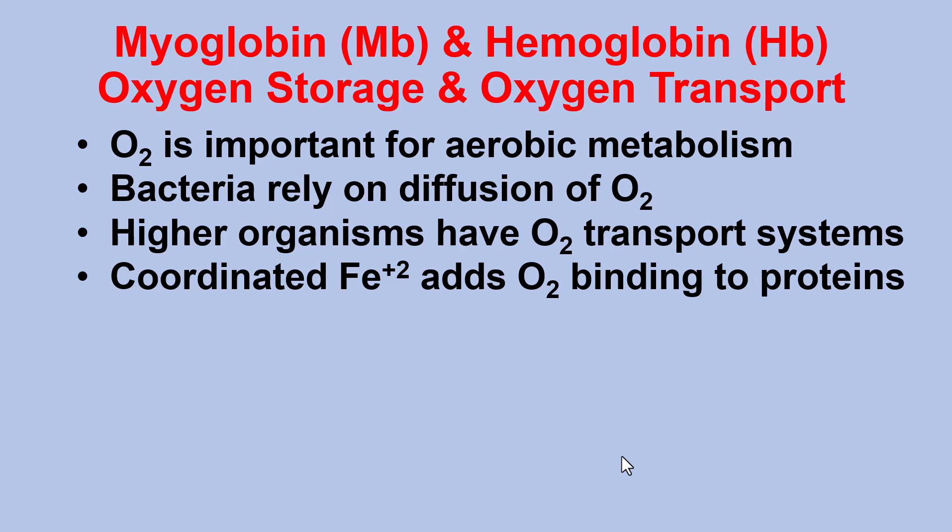Myoglobin and hemoglobin are involved in oxygen storage and oxygen transport. O2 is important for aerobic metabolism — we get a lot more energy out of burning our carbon sources to CO2 in water than not. Bacteria rely on diffusion of O2; however, higher organisms have O2 transport systems. We use a coordinated iron, Fe2+ (ferrous iron), that enables O2 binding to proteins.